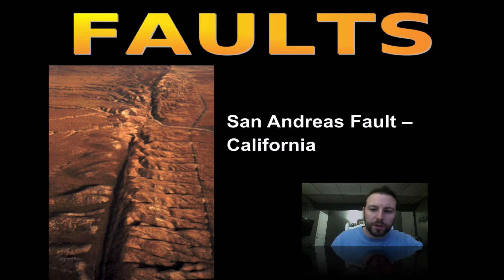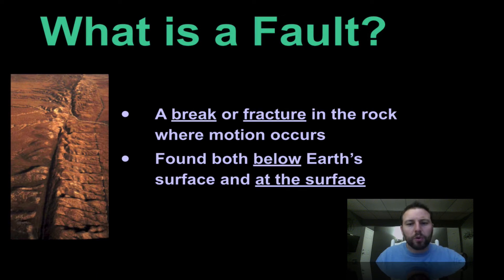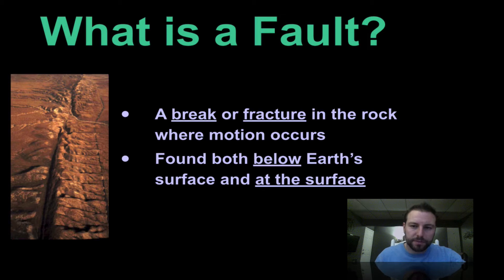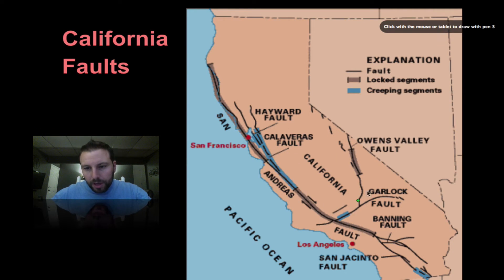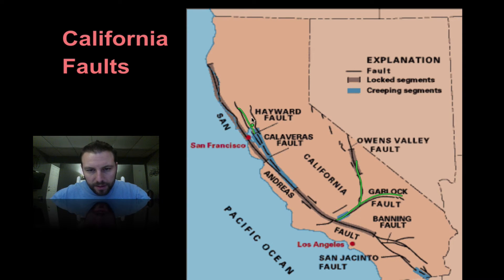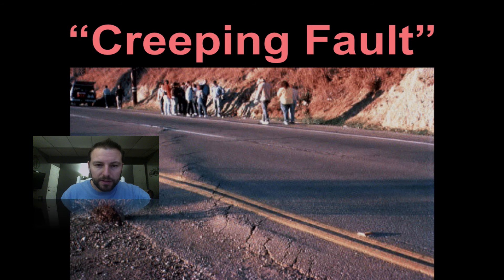Some famous faults include the San Andreas Fault located in California. A fault is nothing more than a break and fracture in the rock, as we've seen in earlier pictures, and can be found both below the earth's surface and at the surface. San Andreas is the most notable one running right along the west coast, but there are also a number of smaller faults in the area. Really, if you're looking at moving to California, you might want to rethink that.